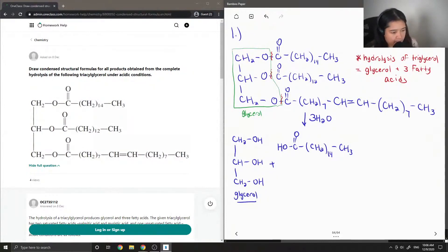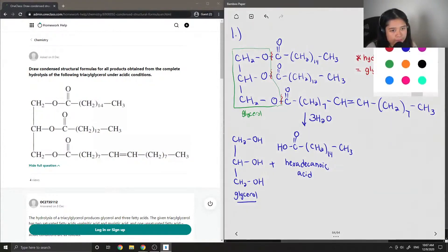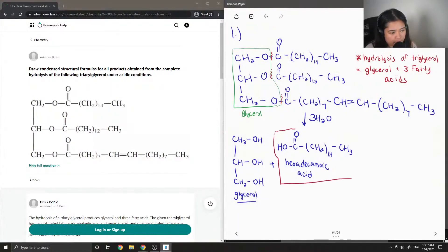Okay, if we count the total number of carbons, we have 14 in the chain plus 2. One from the carboxylic acid group and then the other one from the end methyl group. So since we have 16 in total, this can be written as hexadecanoic acid. So every time we have a carboxylic acid group, we know it will end in oic acid. So I'm going to box this in.